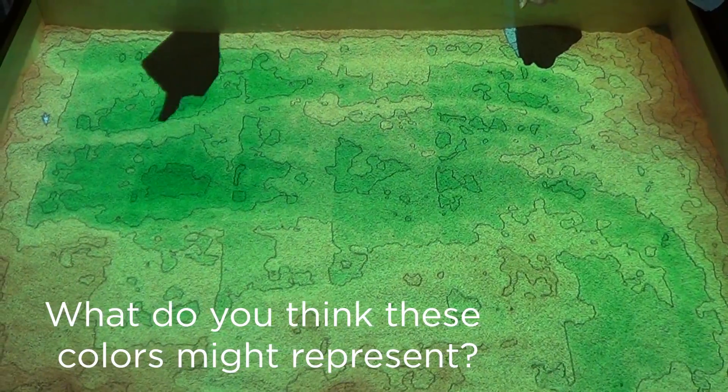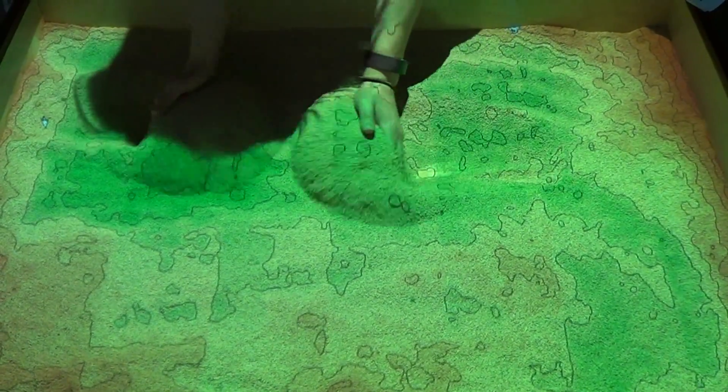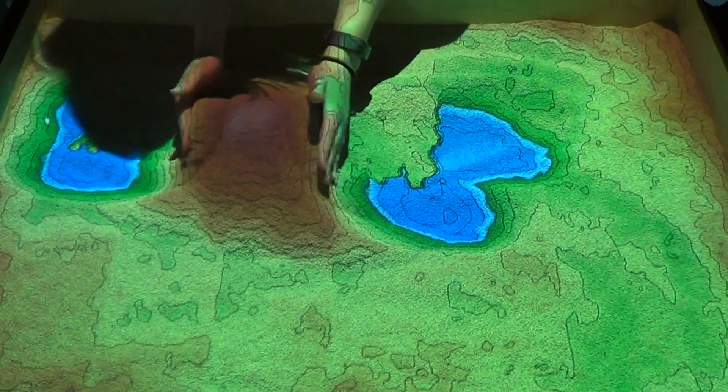So right now I see some green and some orange and yellow in between. So we're going to make a landform and I want you to think about what landform is being created.